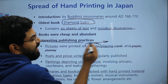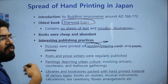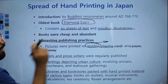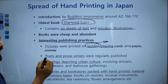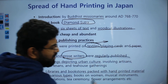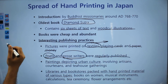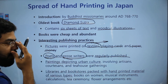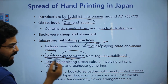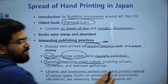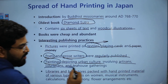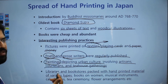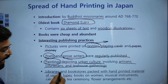These were very interesting practices because, in the rest of the world, printing was done on paper itself, but in Japan printing was primarily done on textiles. Poets and prose writers were regularly published in Japan, and there were many folk stories on Japanese culture published regularly. Paintings were also depicted reflecting urban culture, involving artisans, courtesans, and tea house gatherings.